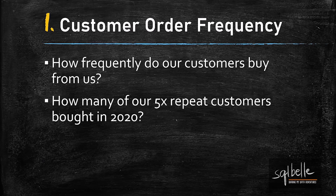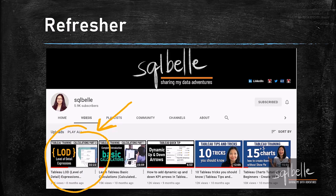In here, we will look at the customer order frequency and we will answer a couple of questions. First, how frequently do our customers buy from us? And second, how many of our five times repeat customers bought in 2020? If you need an LOD expressions refresher, please check out another comprehensive tutorial I have on this topic. I will put up a link in the card above and description down below.